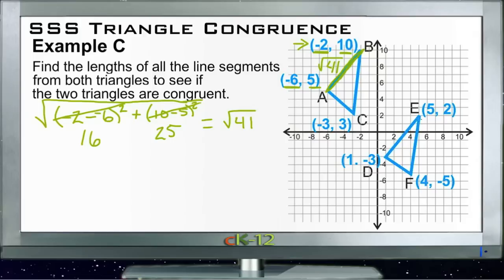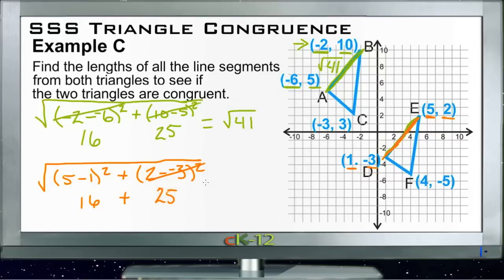Now we need to compare that to side ED. Side ED is the square root of the x-coordinates 5 and 1, so (5 - 1)², added to the y-coordinates 2 and -3, so (2 - (-3))². 5 - 1 squared is 4² or 16, and 2 - (-3) is 5² or 25. 16 + 25 = 41, so we're looking for the square root of 41. Side DE is also √41 units.